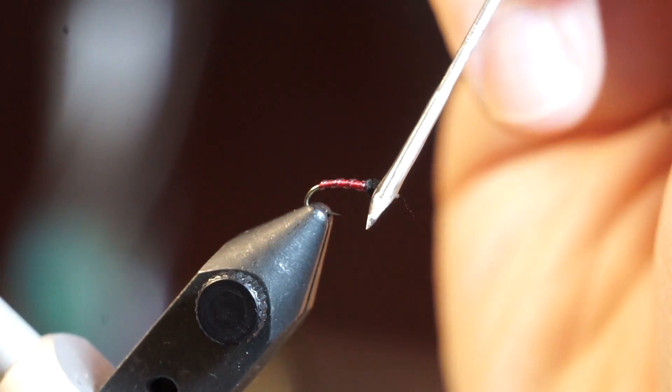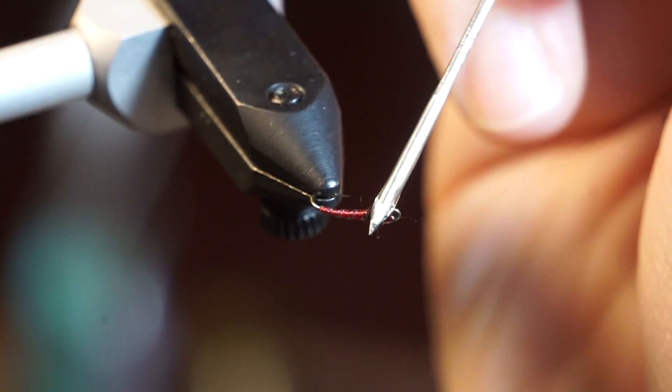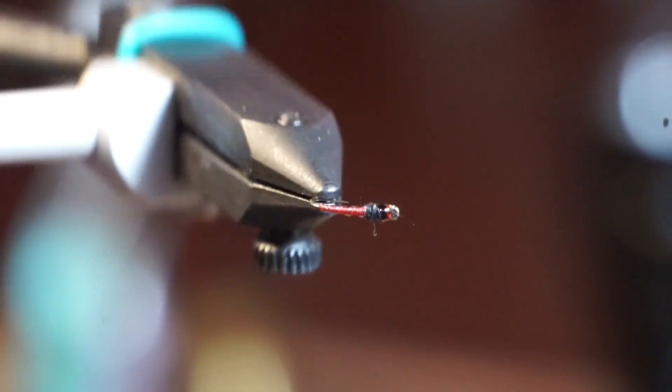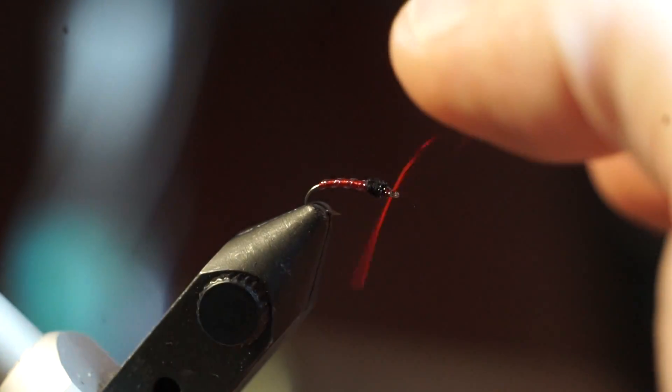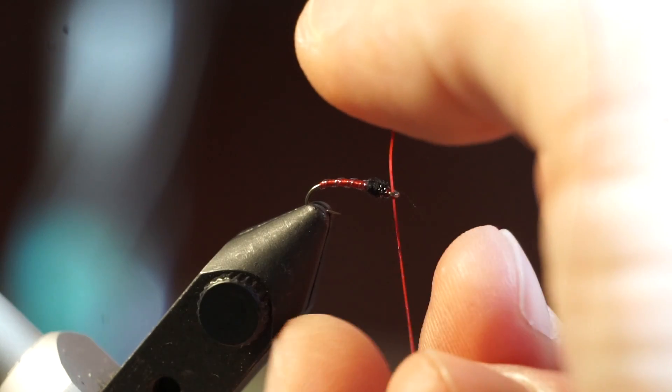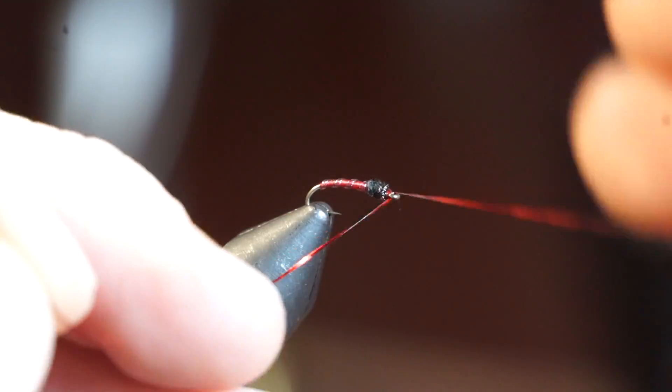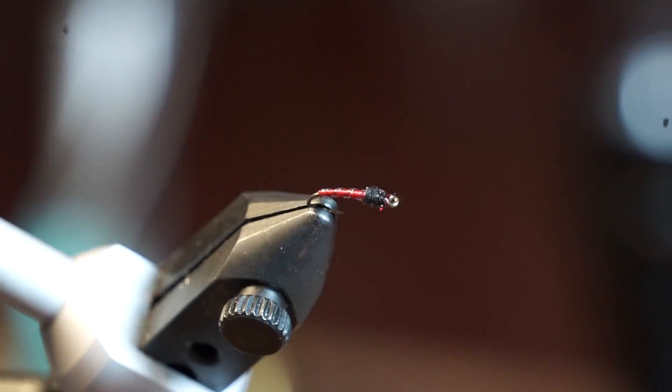I use a bodkin and place a small amount on the whip finish on both sides. If you added too much like I did and got some in the eye of the hook, just take some crystal flash and put it through the eye of the hook. Then run it up and down and remove the resin from the eye before curing it.